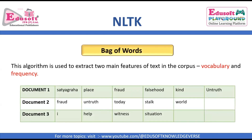Coming to the next one — bag of words. This algorithm is used to extract two main features of text in the corpus. The first one is vocabulary and the second one is frequency. Bag of words is used to pre-process the text and keep the words and the count of their occurrence in the document. After removing stop words, document 1 has: satyagraha, place, fraud, falsehood, kind, and untruth. Document 2 has: fraud, untruth, today, stalk, word. Document 3 has: I, help, witness, and situation.